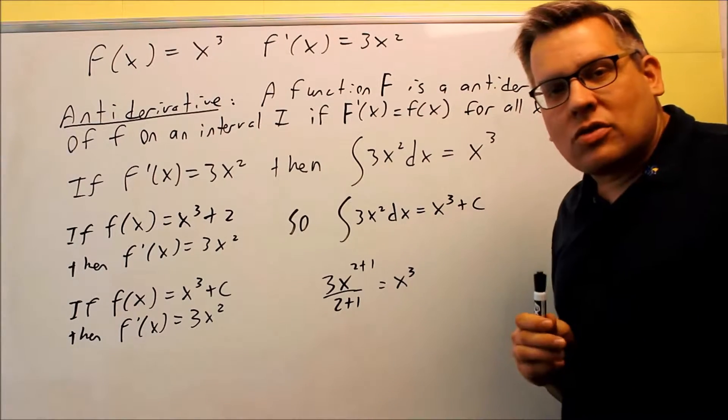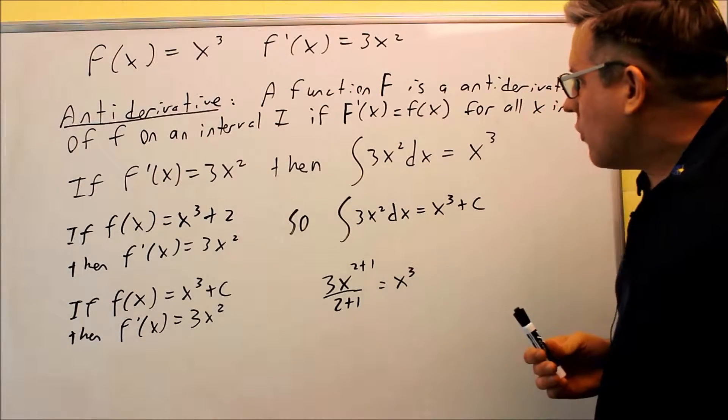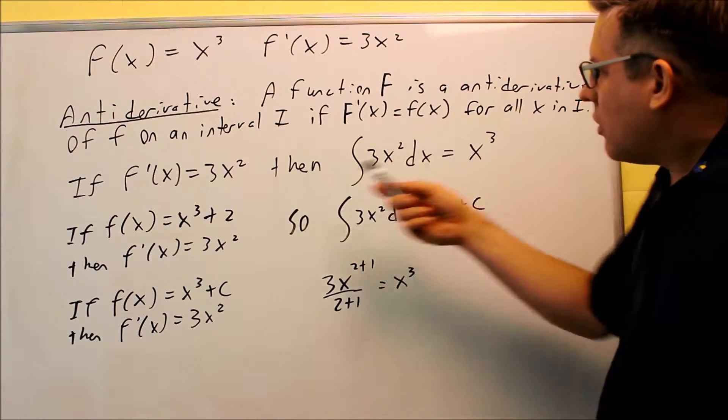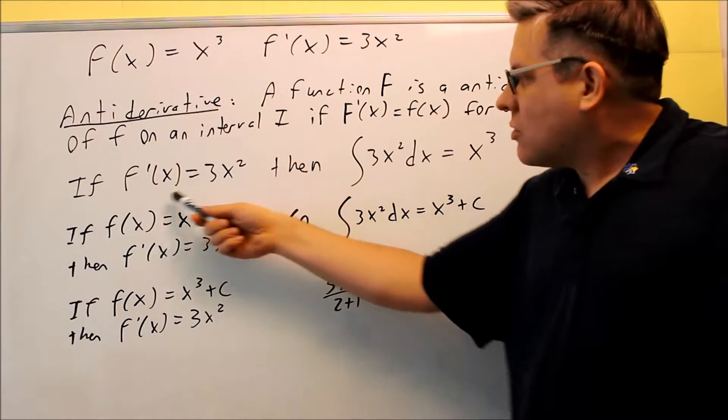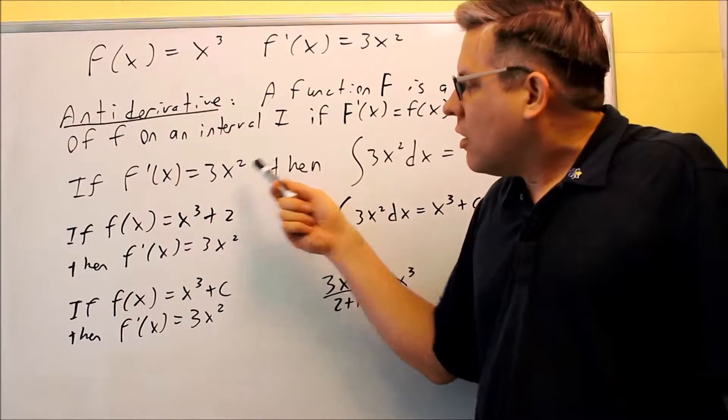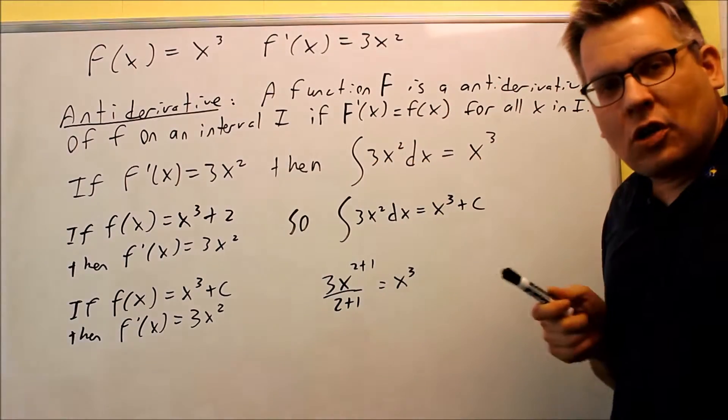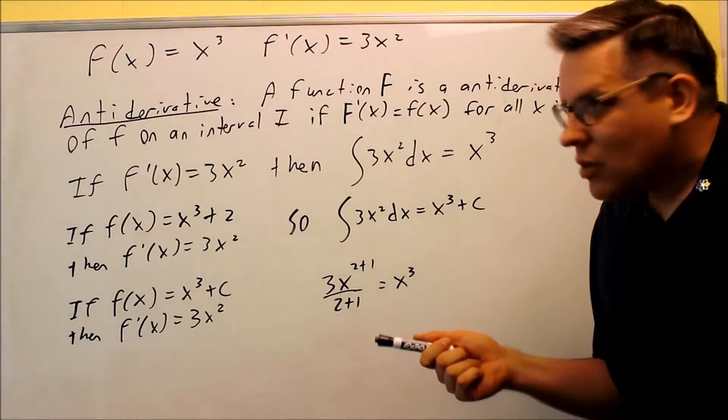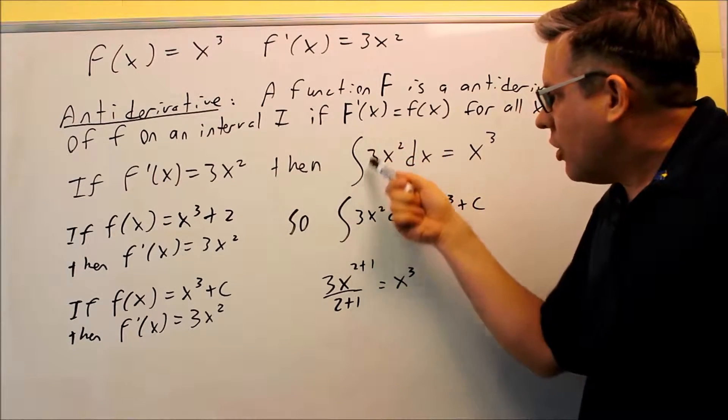We use capital letters to indicate the anti-derivative. If f'(x) equals 3x squared, this is a notation that we're going to be using to indicate anti-derivatives. This is called an integral symbol.